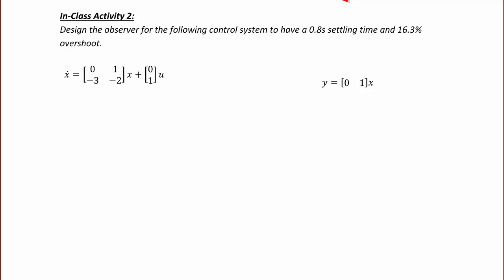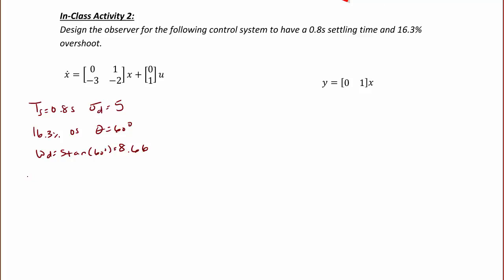In class activity 2, design the observer for the control system with x-dot = [0, 1; -3, -2]*x + [0; 1]*u and y = [0, 1]*x, to have a 0.8-second settling time and 16.3% overshoot. Based on the design specs, sigma_d = 5 and theta = 60 degrees, so omega_d = 5*tan(60°) = 8.66. The desired poles are at -5 ± j8.66, giving characteristic equation s² + 10s + 100.